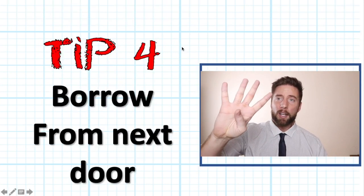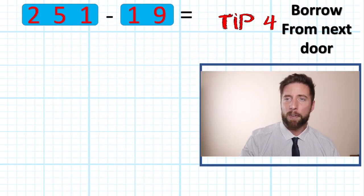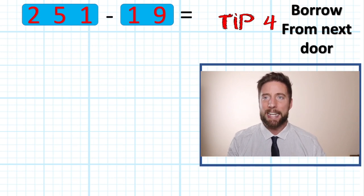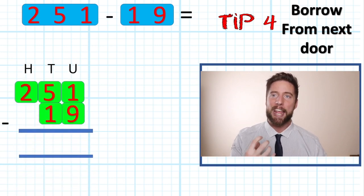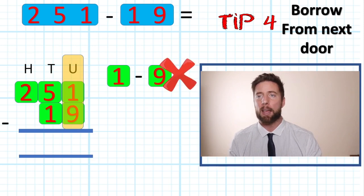Tip four: if we need to borrow, borrow from next door. If I have 251 subtract 19, I cannot take nine away from one. So my one has to get bigger. How am I going to get bigger?